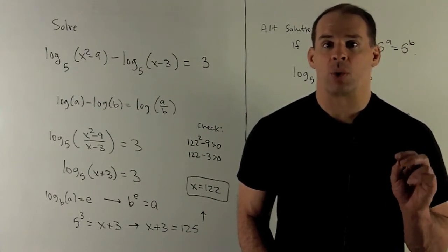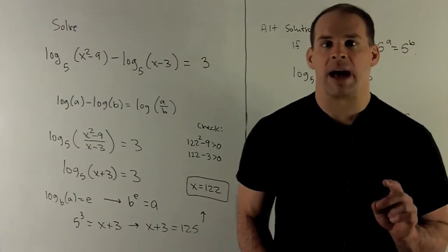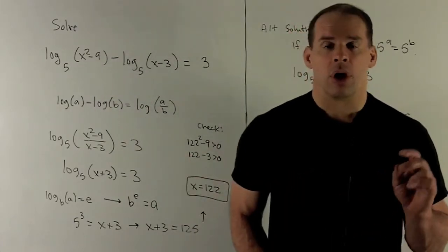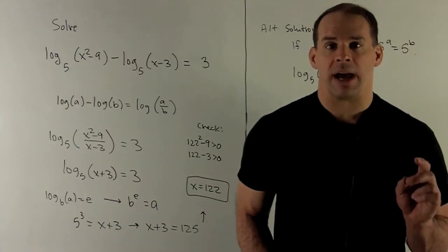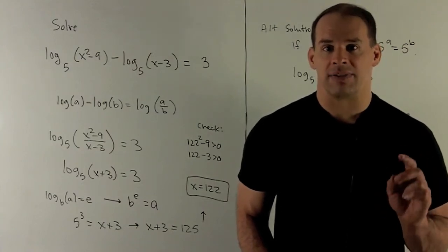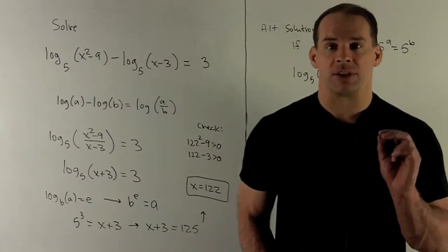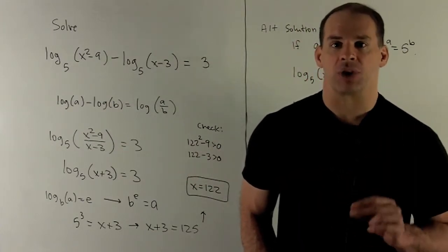So if I have 122 squared minus 9, that's definitely positive, so it clears this part. On the other part, 122 minus 3, again, definitely a positive number. So we're good here also. So x equal to 122, that's our answer.